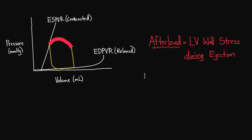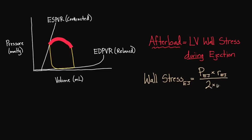Let me refresh your memory on what wall stress is exactly. Wall stress during ejection is equal to pressure during ejection times the radius during ejection — where the radius is the radius of the left ventricle — divided by 2 times the wall thickness during ejection.